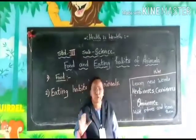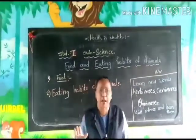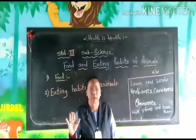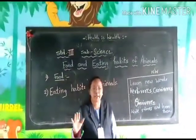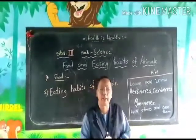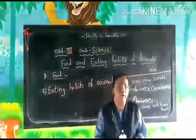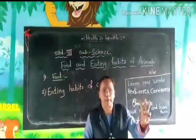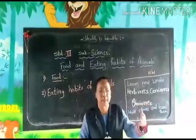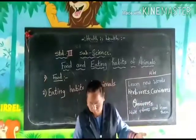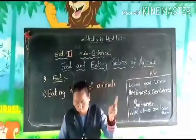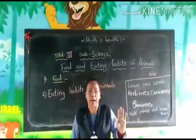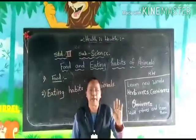First one: herbivores. Herbivores are plant-eating animals. Which are they? Can you tell me? Buffalo, cow, deer, elephant, and so on. These animals are plant-eating animals.